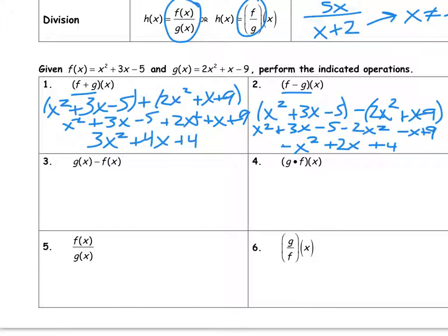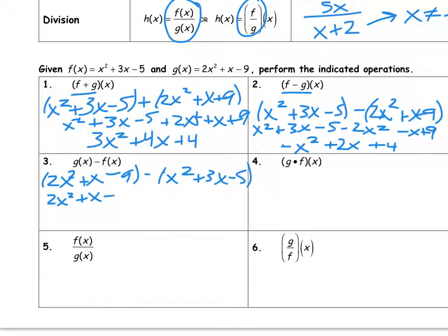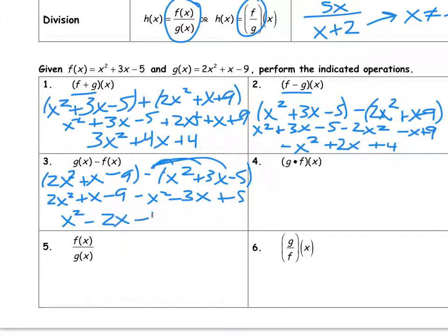Let's see how that changes if I switch the order of the functions. I get 2x squared plus x minus 9, distribute, and get negative x squared, negative 3x, positive 5. So the result is x squared minus 2x minus 4.